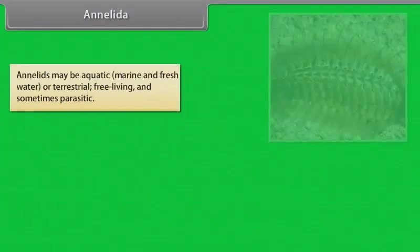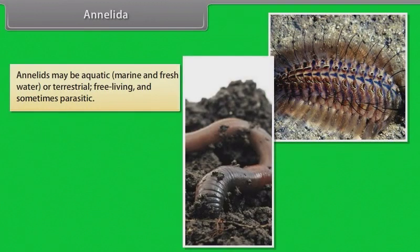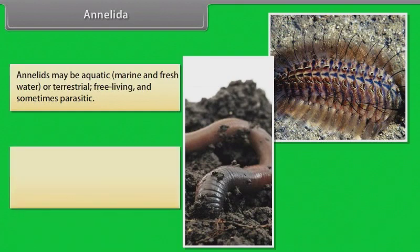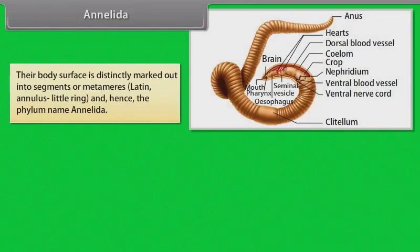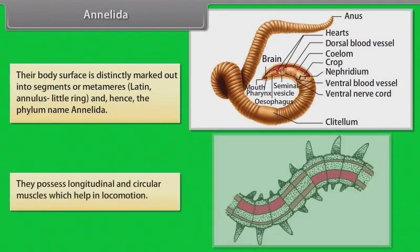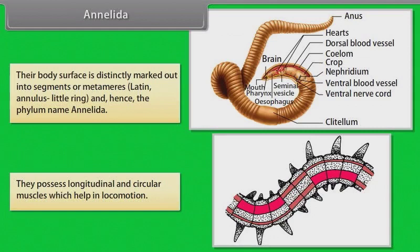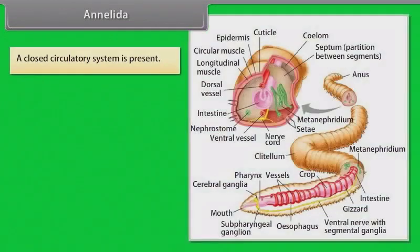Annelids may be aquatic — that is marine and freshwater — or terrestrial, free-living and sometimes parasitic. They exhibit organ system level of body organization and bilateral symmetry. Annelids are triploblastic, metamerically segmented and coelomate animals. Their body surface is distinctly marked out into segments or metameres — from the Latin word 'annulus' meaning little ring — and hence the phylum name Annelida. They possess longitudinal and circular muscles which help in locomotion. A closed circulatory system is present.